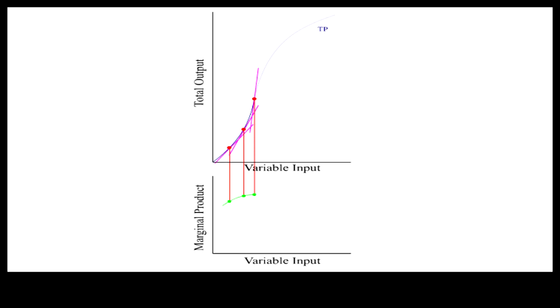But this phase of the production function is followed by a phase where output increases at a decreasing rate as the slope of its tangents, namely the marginal product, gets flatter.